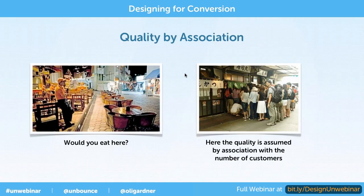Here's a similar example: on the left we have an empty restaurant, and on the right there are a lot of people waiting outside — like a Walmart on Black Friday. Would you eat at the empty one? Probably not, because there's nobody there to tell you the food is decent quality. You assume quality by association with the number of customers. You might not line up, but in your mind you know it's a place to go eat, so you're likely to come back. The more people there, the more association you have with quality.